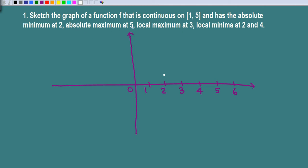Absolute maximum at 5, so that should be the highest point on the graph. Local maximum at 3, so local max at 3 means we should have something like this - locally this should be the highest point.